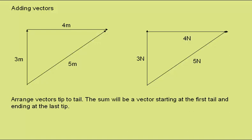We arrange the vectors tip to tail. The sum will be a vector starting at the first tail, ending at the last tip. So here we go from the tail of the 3 meters up to the tip, then we have the tail of the 4 meters to here. The sum, this 5 meter line, goes from the first tail to the last tip.